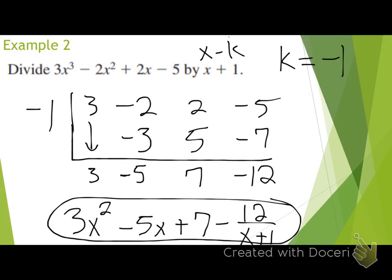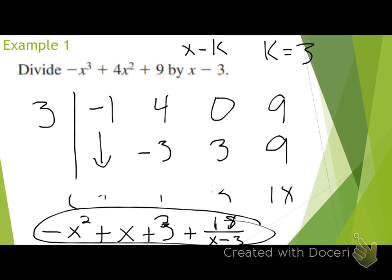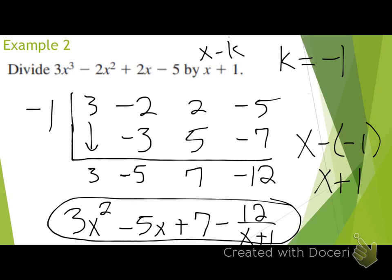Question: how did you get negative 1 for k? We get our k value from our divisor — it takes on the form x minus k. I need a value that when I plug it in, I get my divisor. If I plug in positive 1, I'd get x minus 1, which is wrong. But if I plug in negative 1, using the sign change, that turns to x plus 1. So you're essentially just using the opposite sign of what's there. In the first example it was minus 3, we used positive 3; here it's plus 1, so we used negative 1.